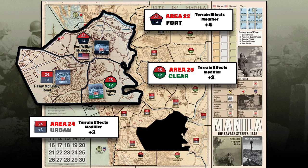In this highlighted section of the map we can see all three Japanese-controlled area types in the game. Each area identifier contains the area number, terrain type — circle for clear, square for urban, and pentagon for fort. The terrain type corresponds to the Japanese defender counters placed in that area during setup. Also listed inside each identifier is that area's terrain effects modifier. The TEM for clear terrain is plus 2, urban is plus 3, and fort is plus 4. The TEM is used when resolving attacks against Japanese units in that area.